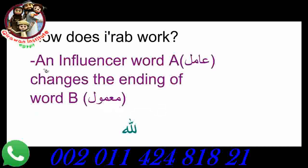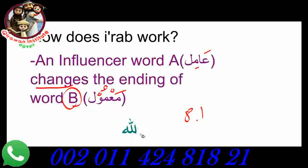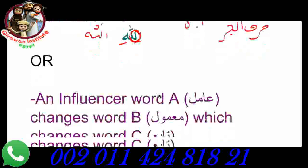So how does i'raab work? An influencer word, let's call it A, also known as aamil, changes the ending of word B, what is known as ma'amool. Looking at an example from video 8.1, we have the verse 'alhamdulillahi rabbil alameen.' We know that laam here is an amil because it's a harf al-jar, as we learned in lesson 8, and harf al-jar changes the ending of the word attached to it to a kasra. So it becomes 'lillahi' — the laam is our aamil, and the word Allah is our ma'amool.